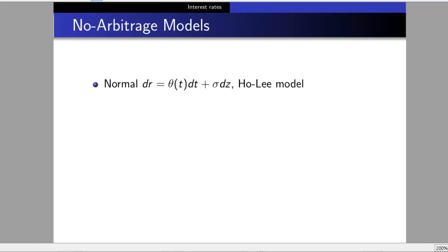We begin with a normal model: dr = θ(t)dt + σdz, called the Ho-Lee model. It's normally distributed because it doesn't have rdt or r terms. The changes are not proportional to the value of r.